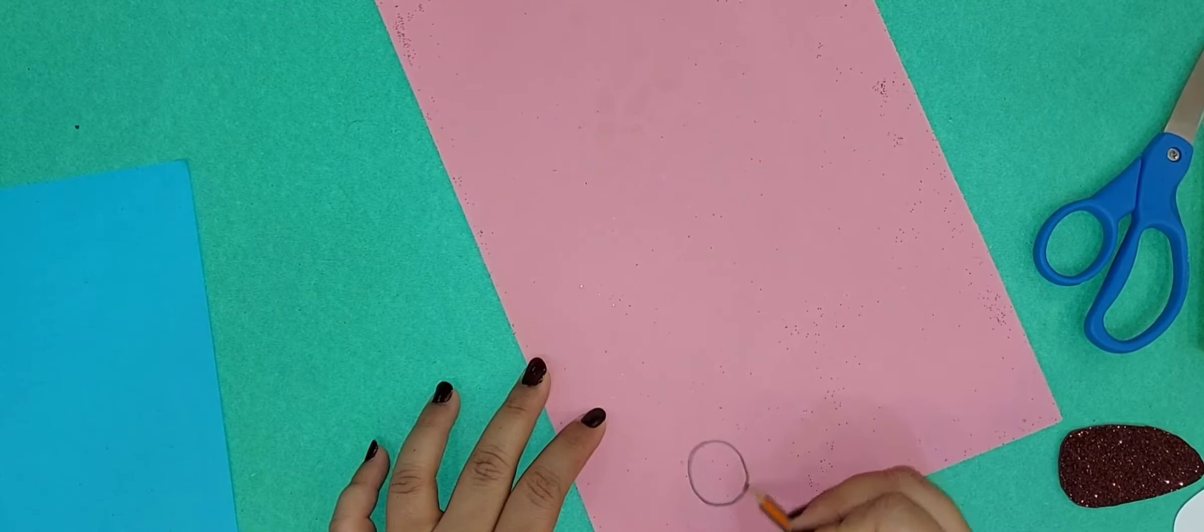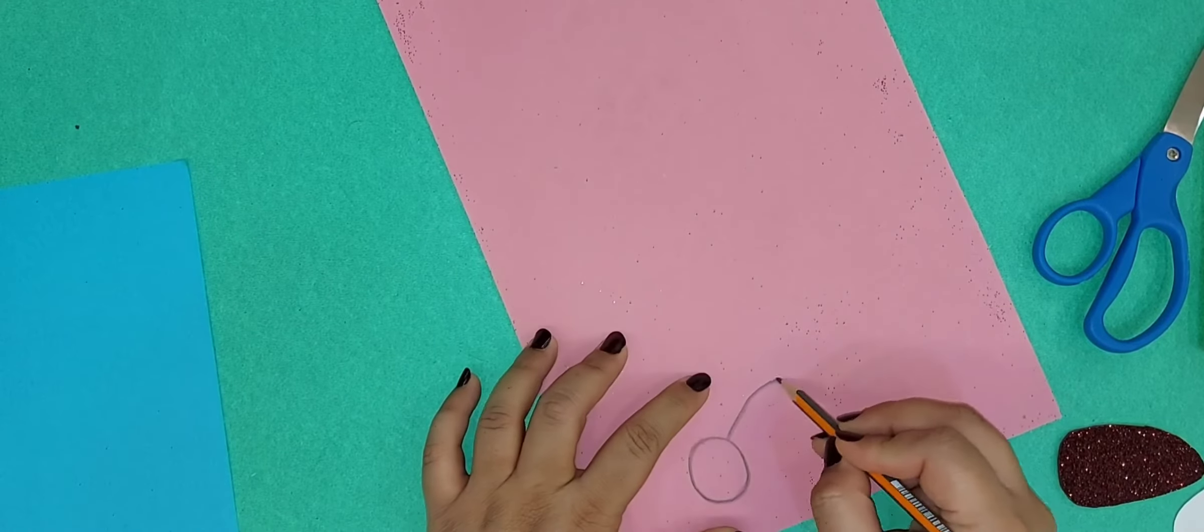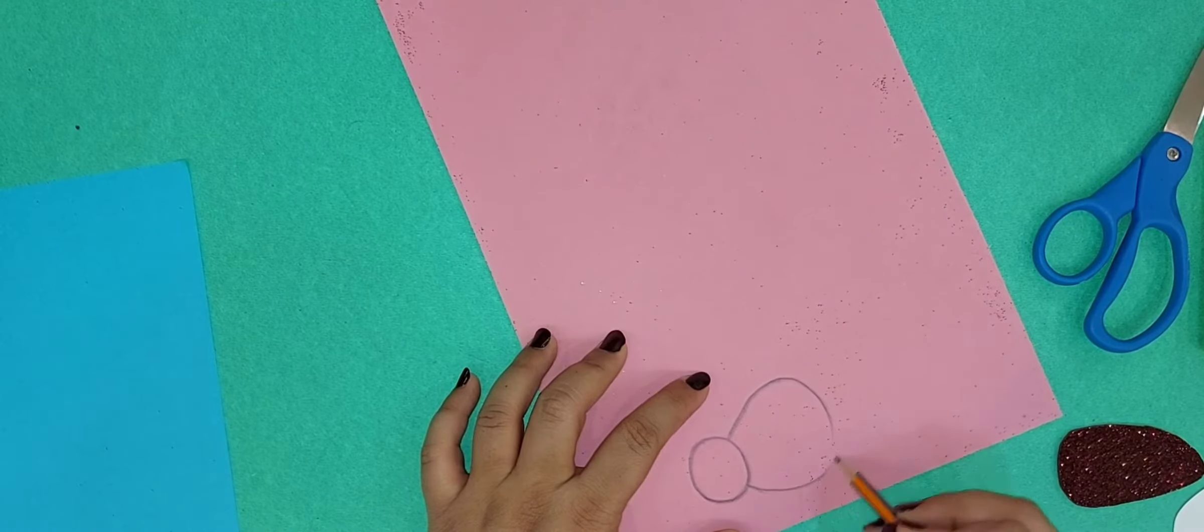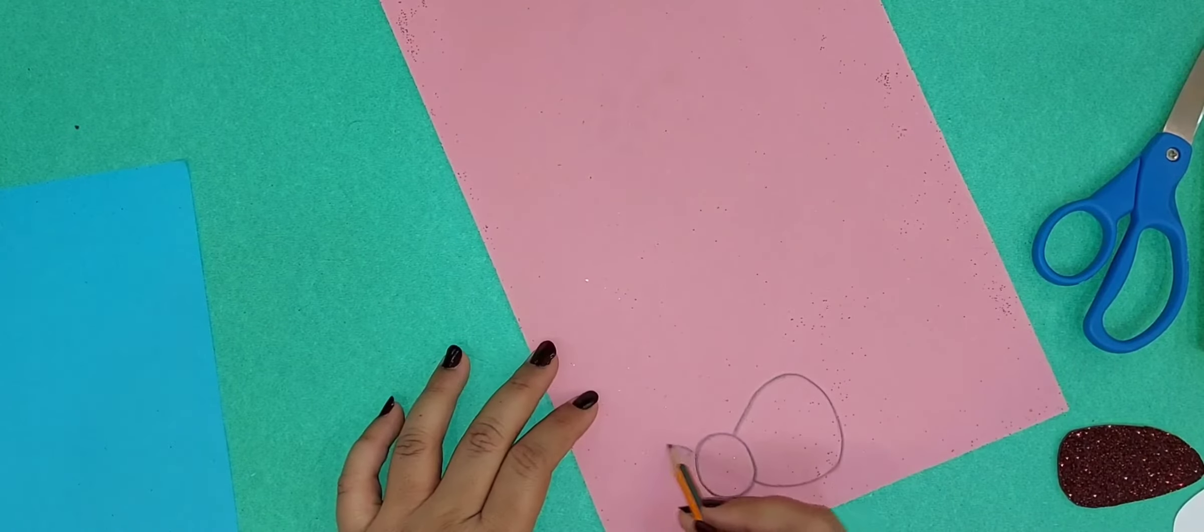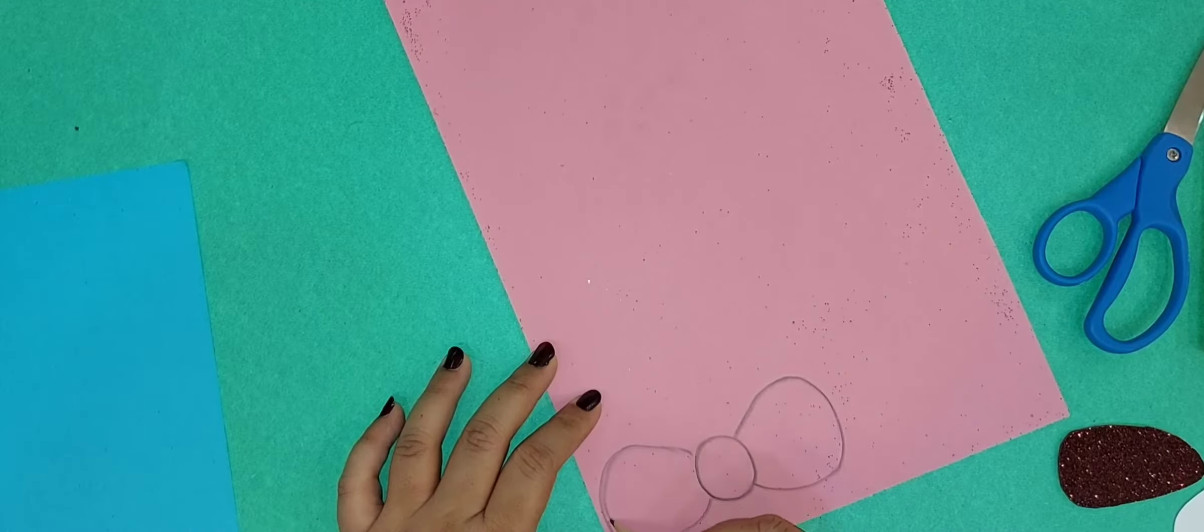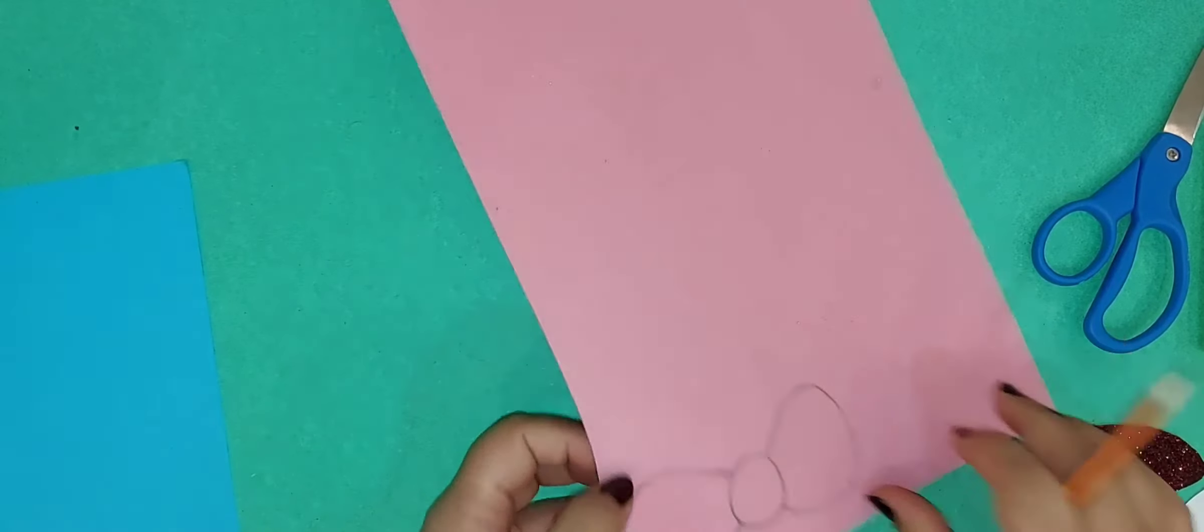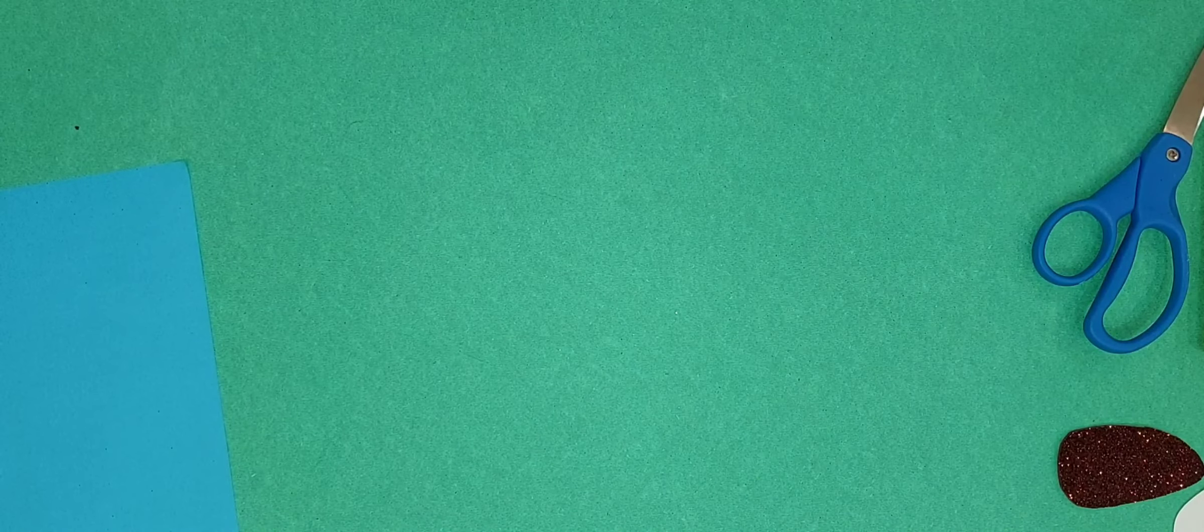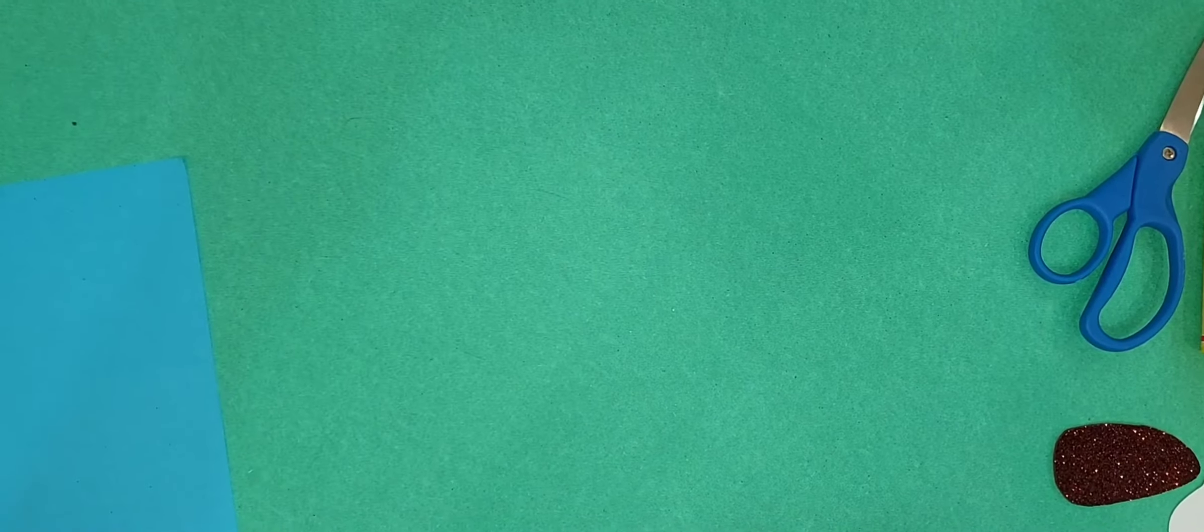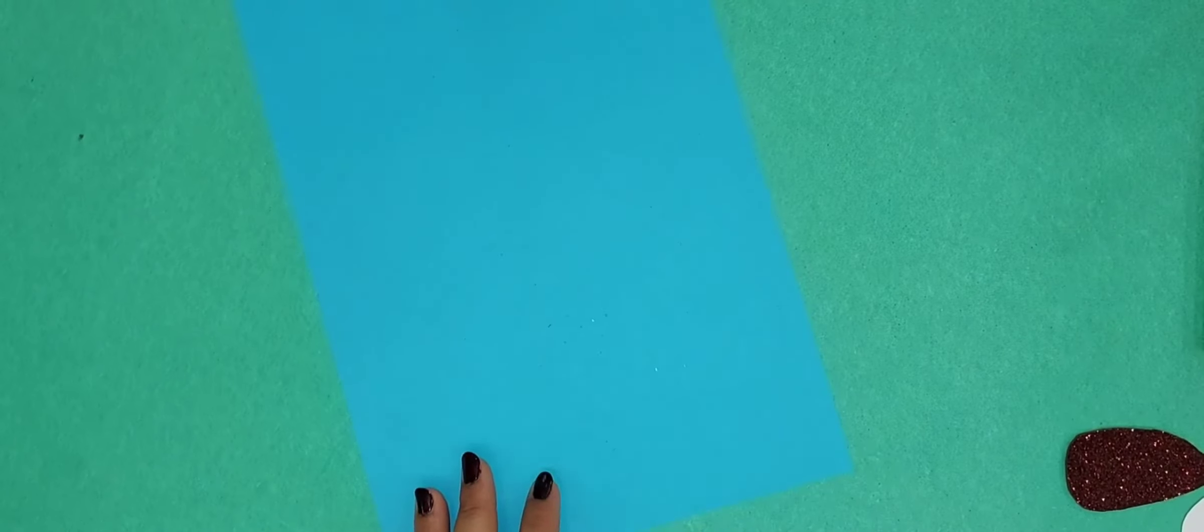First we will make one circle and make a curve from one side. In the same way, we will make the curve on the other side. Now we can cut it.